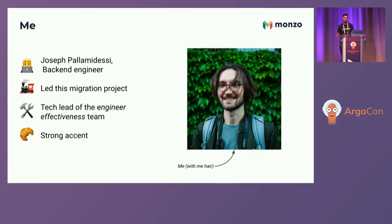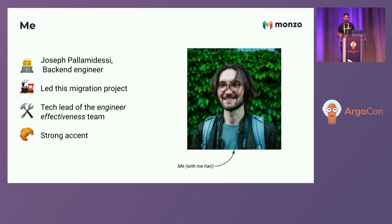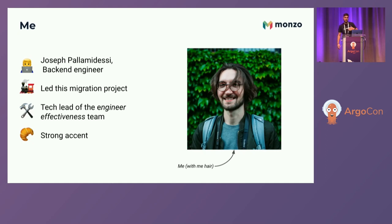A little bit about me and why I'm doing this talk. I'm Joseph Palamedici. You have a picture of me with much more hair. I'm a backend engineer working in the platform team at Monzo. I led this migration project where we essentially replaced our default deployment strategy to use Argo Rollout and automated rollback by default.